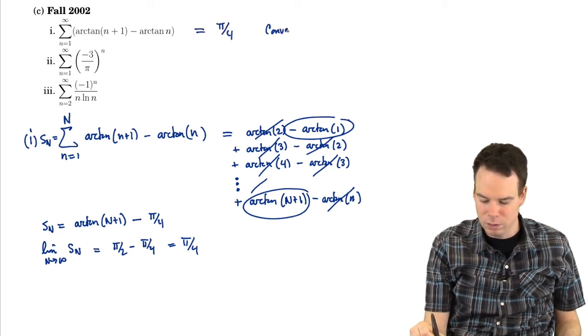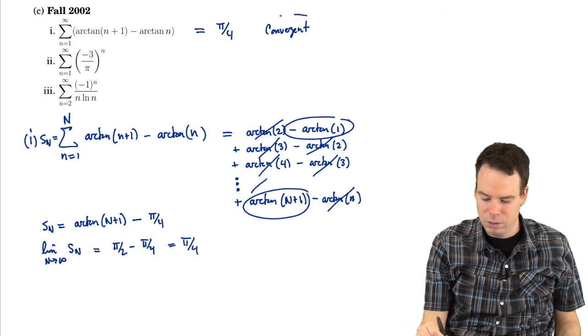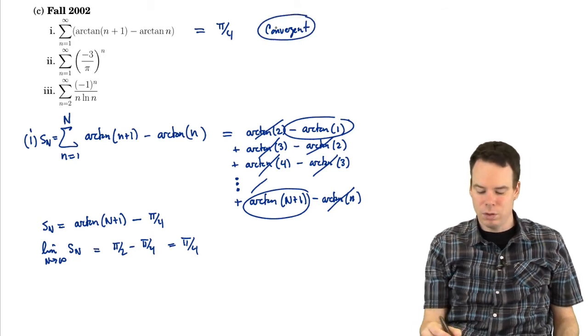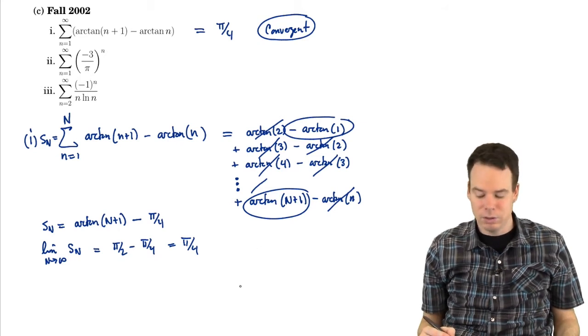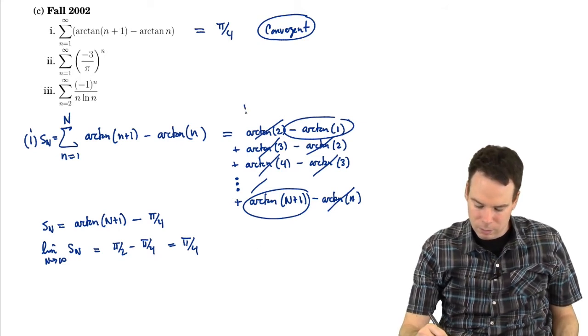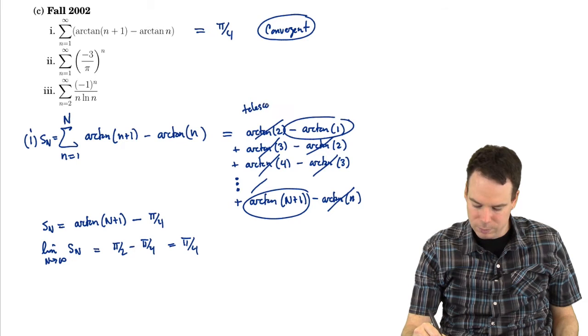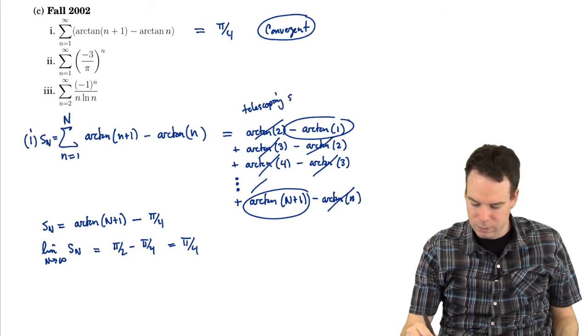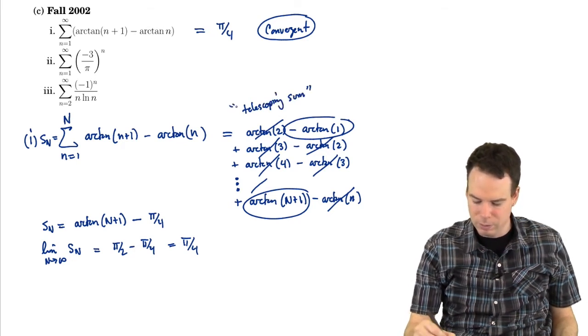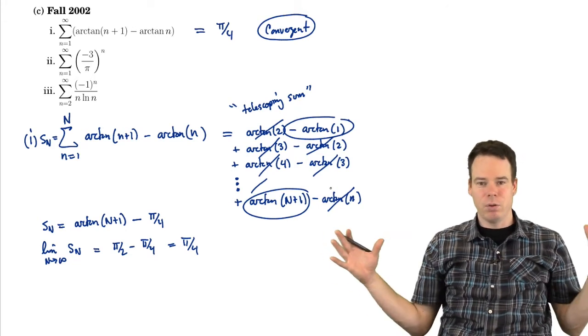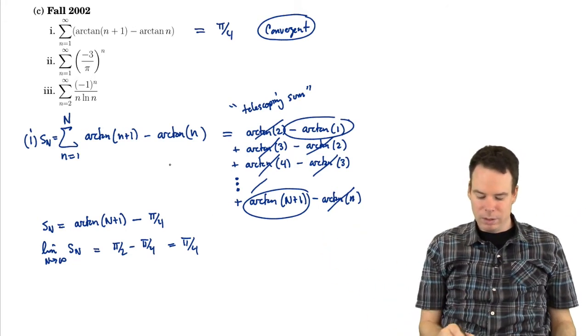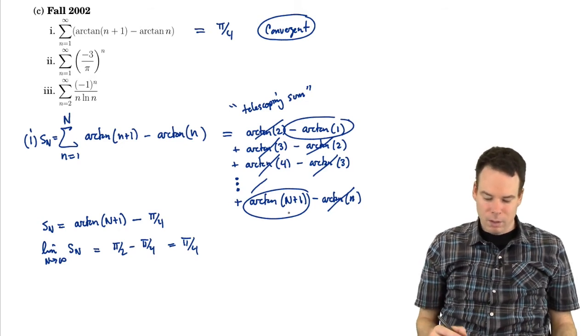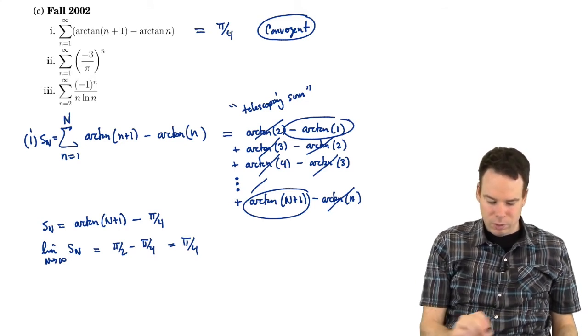So it's convergent. Not only is it convergent, we have exactly what it converges to. It converges to π by 4. So we use the fact that this is a telescoping sum. That's what we call this because the partial sums just collapse down, a whole bunch of cancellations happen and you end up with the first term and the last term. Then we can look at the limiting value of those. So this is convergent and we also got what it converges to.